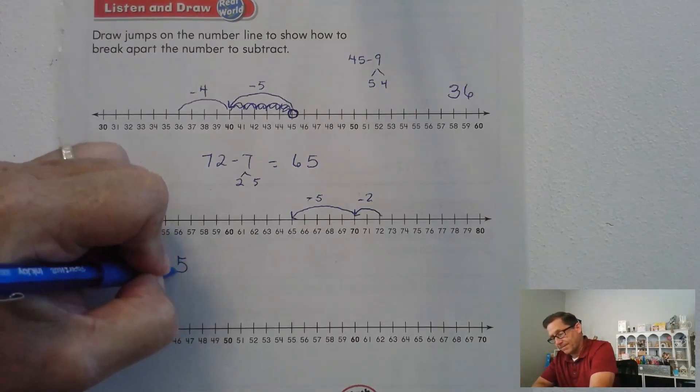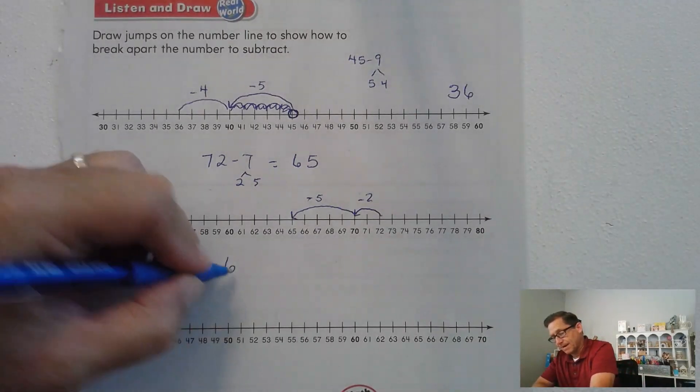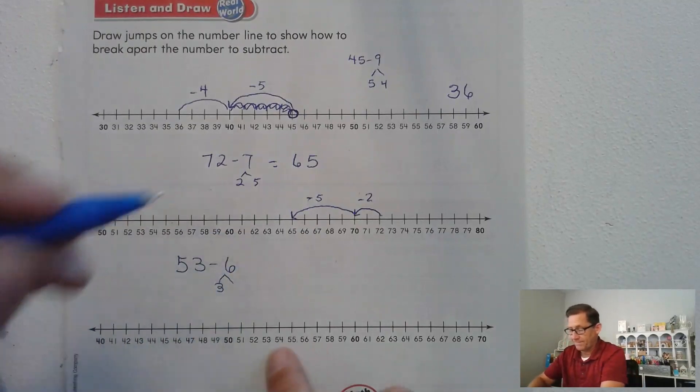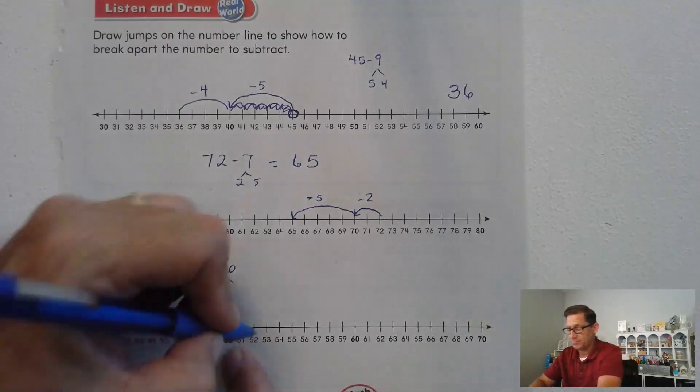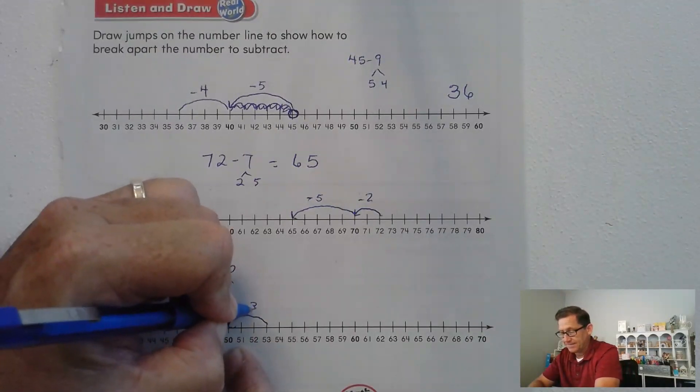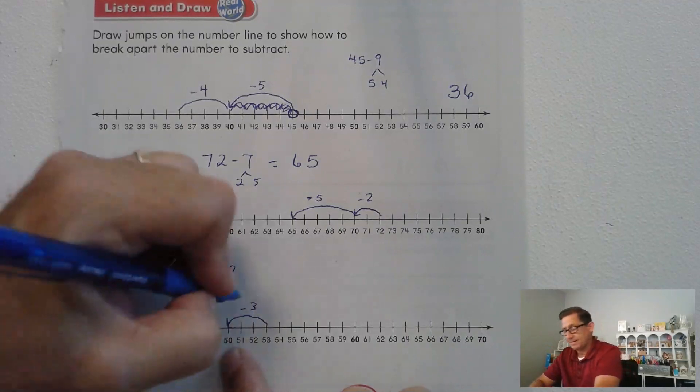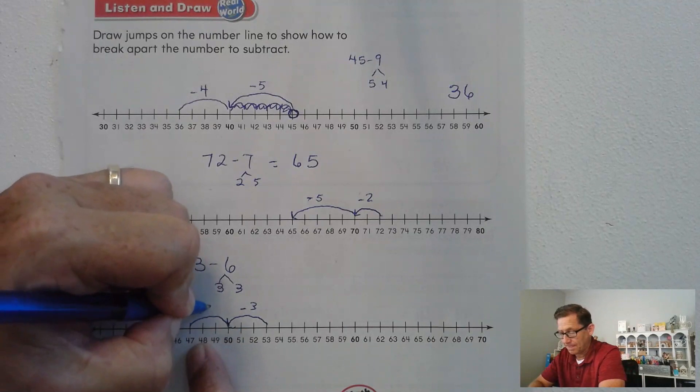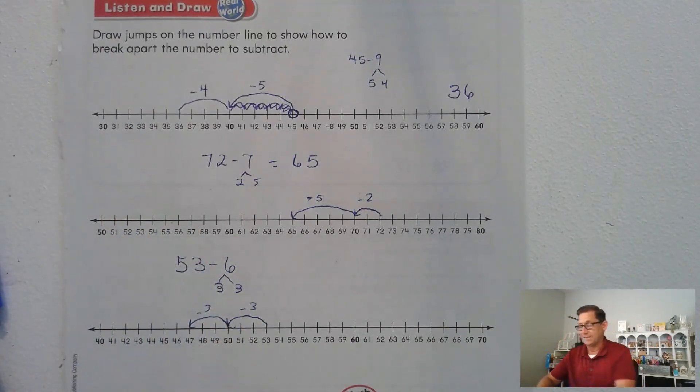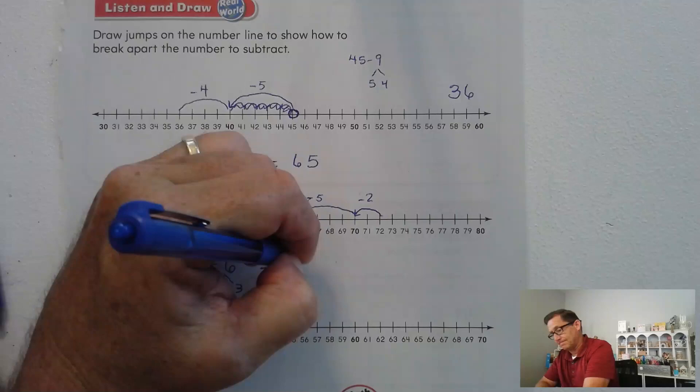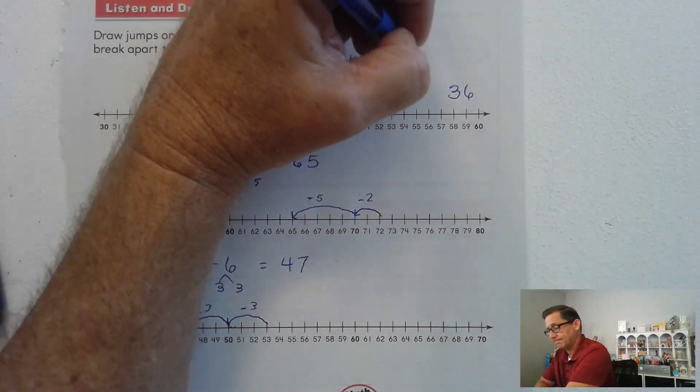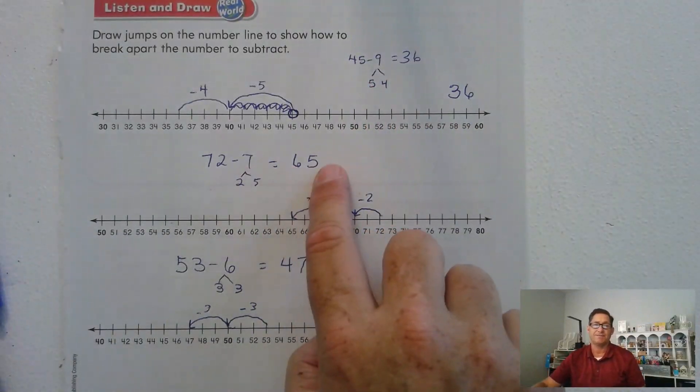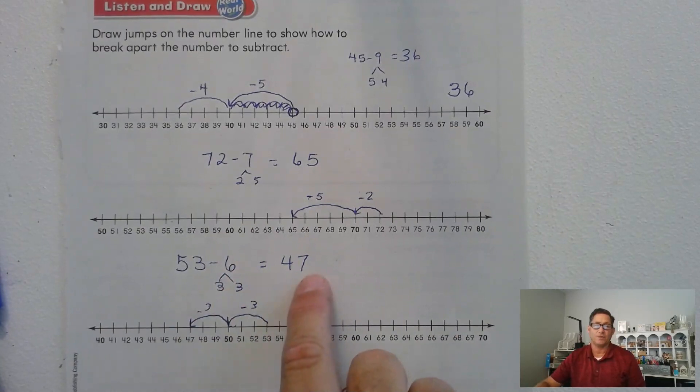53 minus 6 was our problem. Well, if I'm at 53, I want to subtract 3 because that's going to put me at 50. And then I need to subtract 3 more: 1, 2, 3. And that puts me at 47. So 45 minus 9 is 36. 72 minus 7 is 65. And 53 minus 6 is 47.